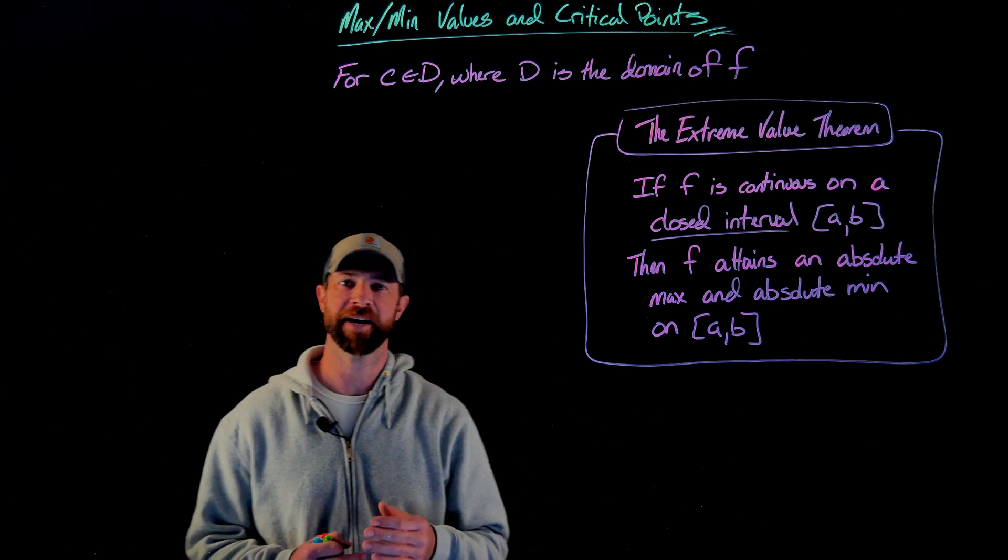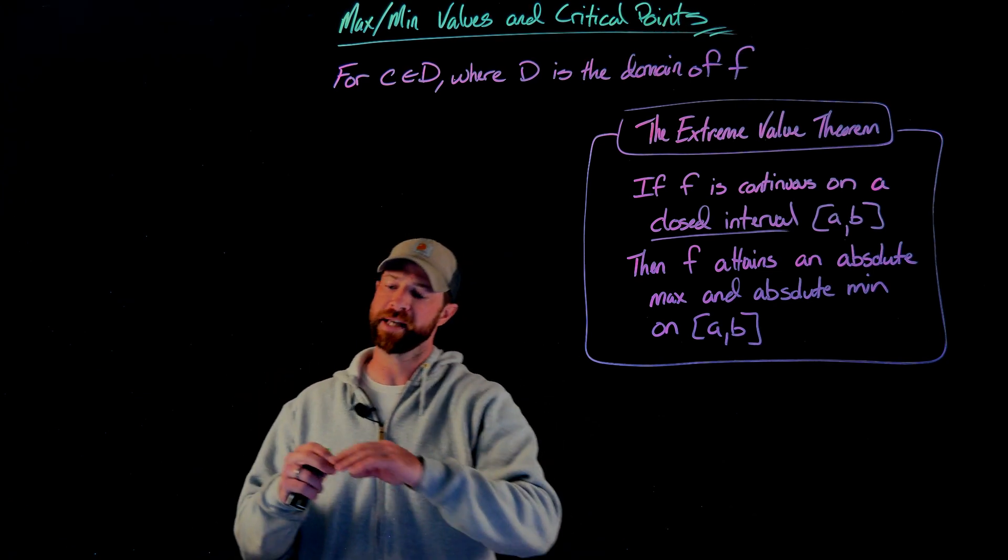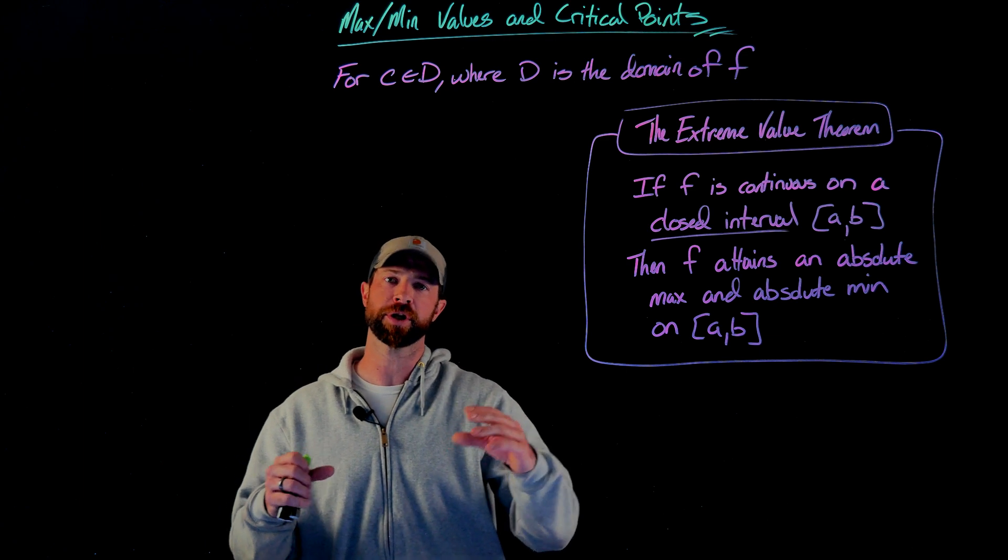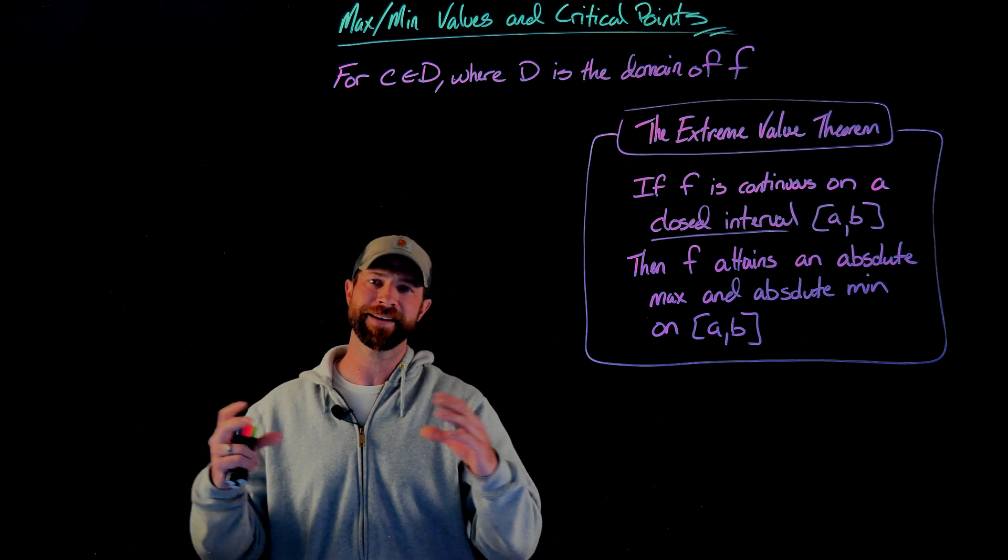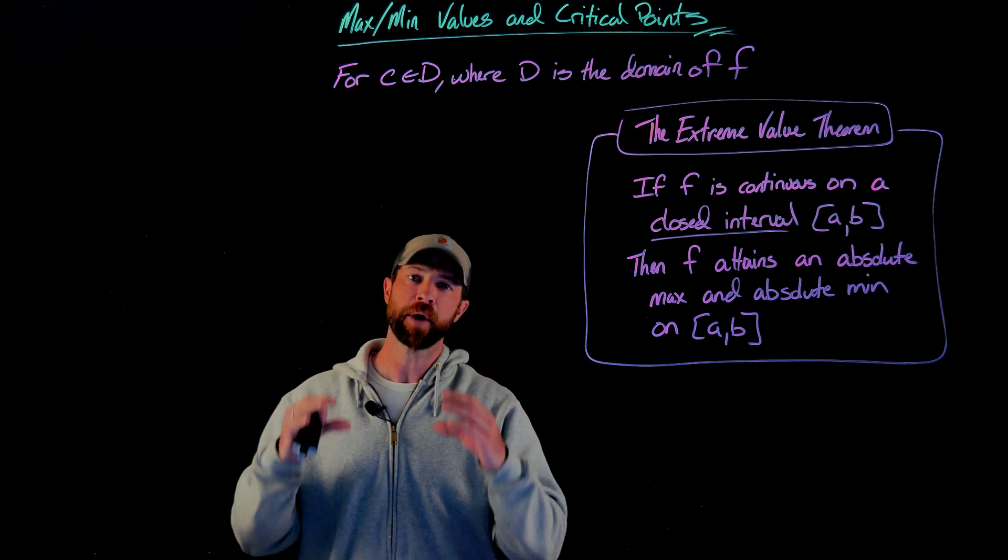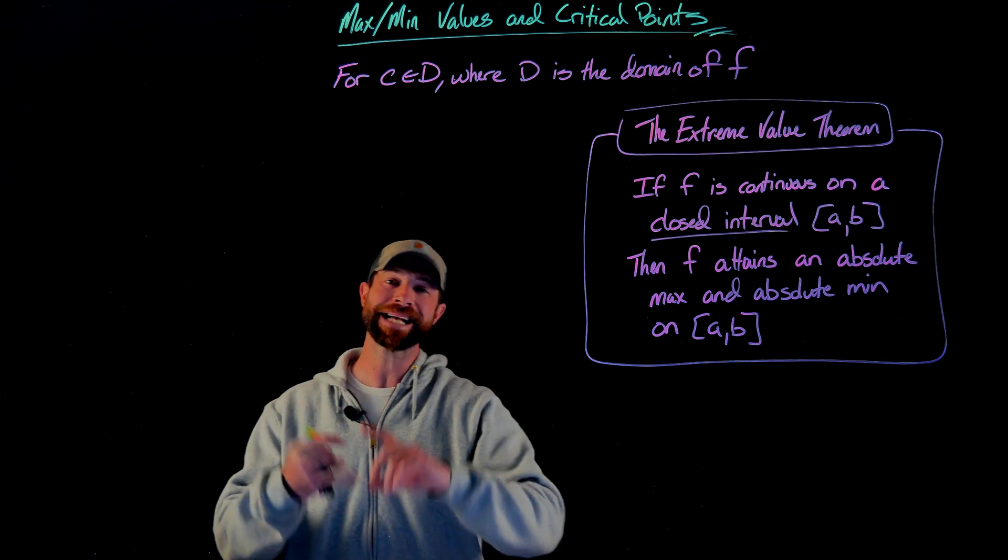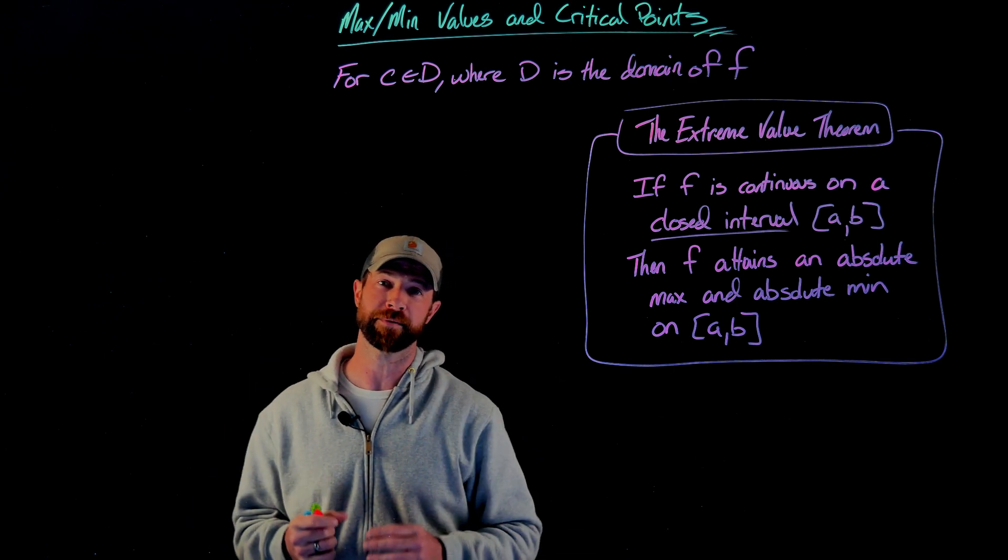Let's now talk about the extreme value theorem. The extreme value theorem says that if f is a continuous function on a closed interval from a to b, then f obtains an absolute max and an absolute min on that closed interval.